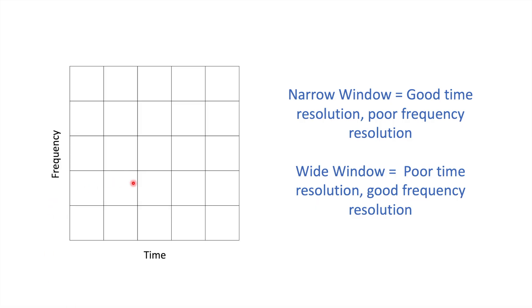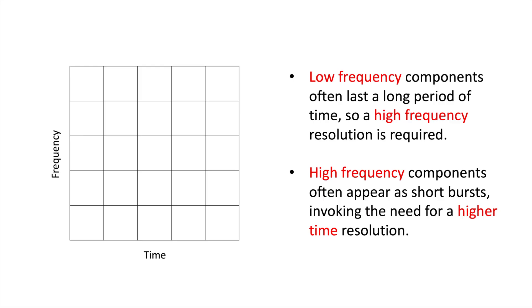Now this fixed frequency resolution for our short time Fourier transform isn't particularly good when we're looking at these two reasons. Low frequency components of sound and signals often last a long period of time. So our time uncertainty is really small because they do last a long time. So really, we need a high frequency resolution that is required to resolve this correctly. High frequency components, on the other hand, appear as short bursts in signals, invoking the need for a higher time resolution. The STFT does not do this very well at all, but the wavelet transform improves on this.